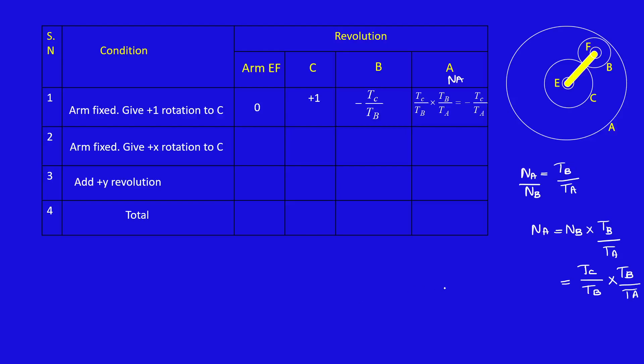So that's what I have written here. The same value I have written here. I can cancel TB on both sides. So you will get TC by TA. Gear B contacts with gear A internally.